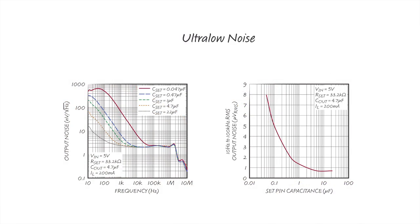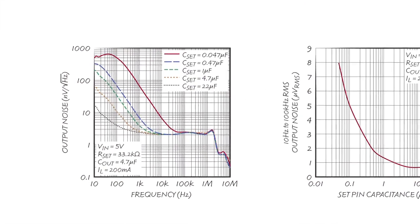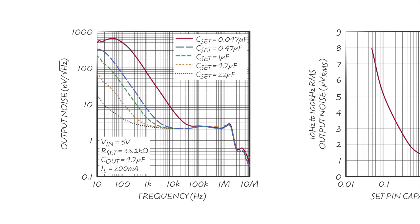Increasing the set-pin capacitance decreases the low-frequency 1 over F noise. With a 22 microfarad capacitor, the output noise is under 20 nanovolts per root hertz at 10 Hz. Note that capacitors can also produce 1 over F noise, particularly electrolytic capacitors.